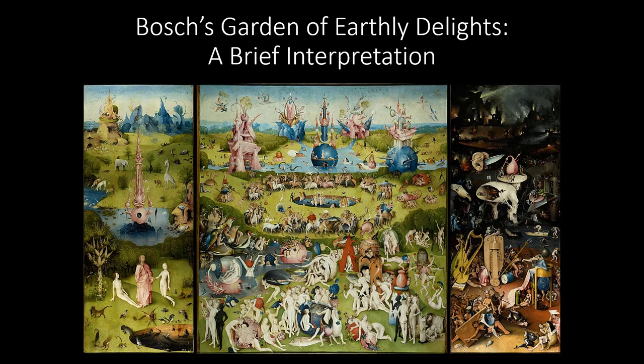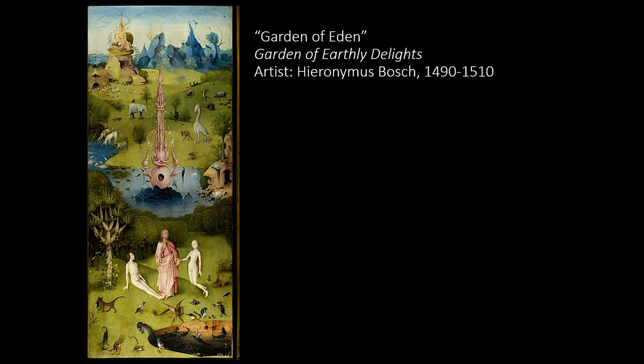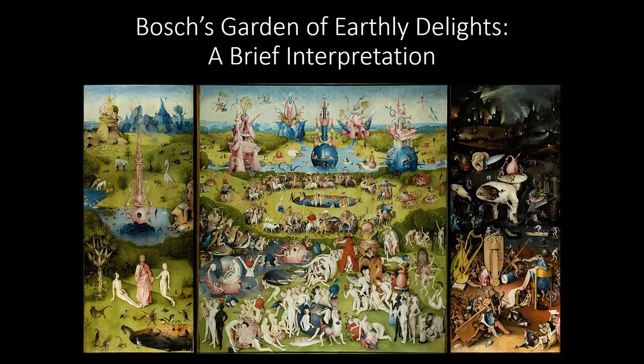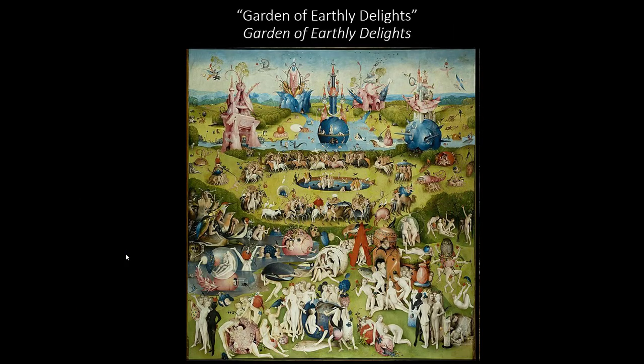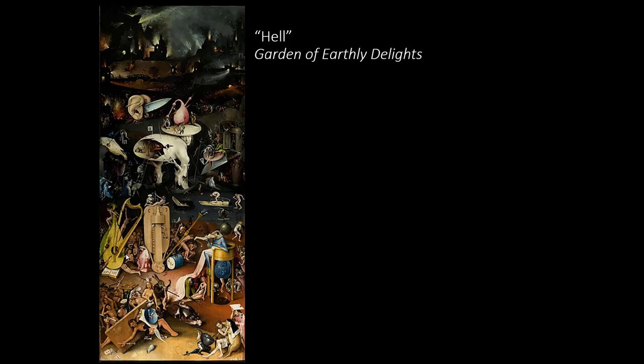This piece consists of three panels. First we have the Garden of Eden, which is this left panel here. The central panel is the Garden of Earthly Delights, and then we have here on the far right the Hell panel. This is easily recognizable for its comparatively dark coloring with bits of menacing fiery flame throughout the back areas of the composition.